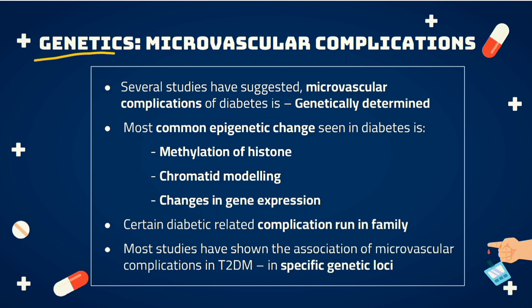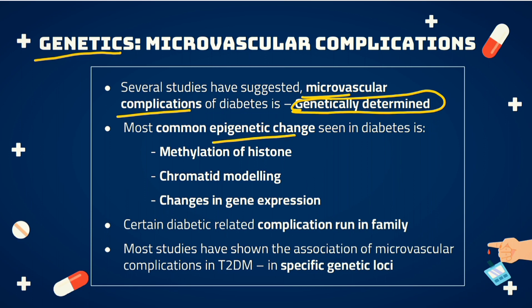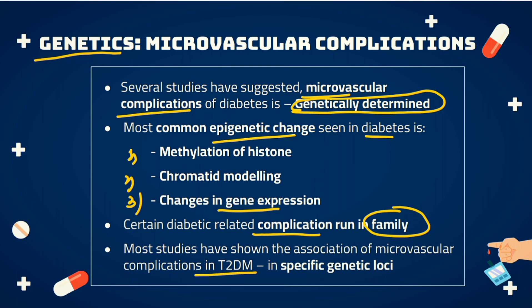Let's discuss the genetics behind the microvascular complications. Various studies have proven that microvascular complications of diabetes are genetically determined. There are various epigenetic changes in diabetes, including methylation of histone proteins, chromatin remodeling, and changes in gene expression. It has also been proven that certain diabetes-related complications run in families, and complications in type 2 diabetes mellitus have associations with various specific genetic loci.